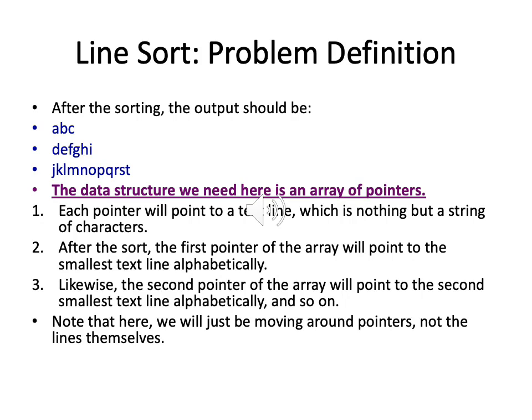The data structure in question is an array of pointers, where each pointer points to a text line — a string of characters. After the sort, the first pointer of the array points to the smallest text line alphabetically, the second pointer to the next smallest, and so on, just like they would appear in a dictionary. We are just moving around the pointers; pointers are the members of the array and we are not moving the lines themselves.